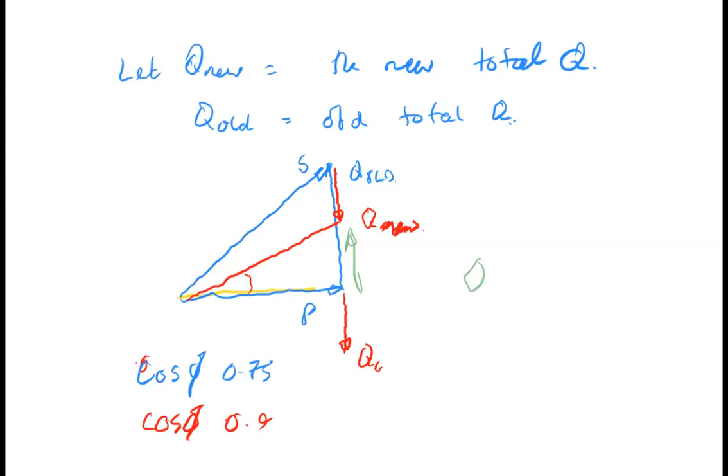Q_c is equal to Q old minus Q new. Do you see how sketching a diagram helps with that?